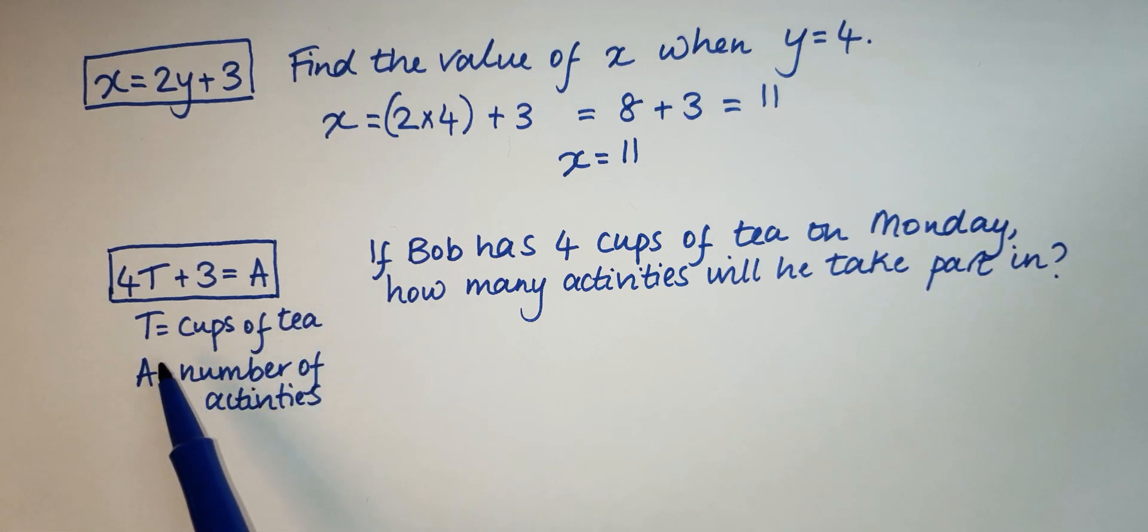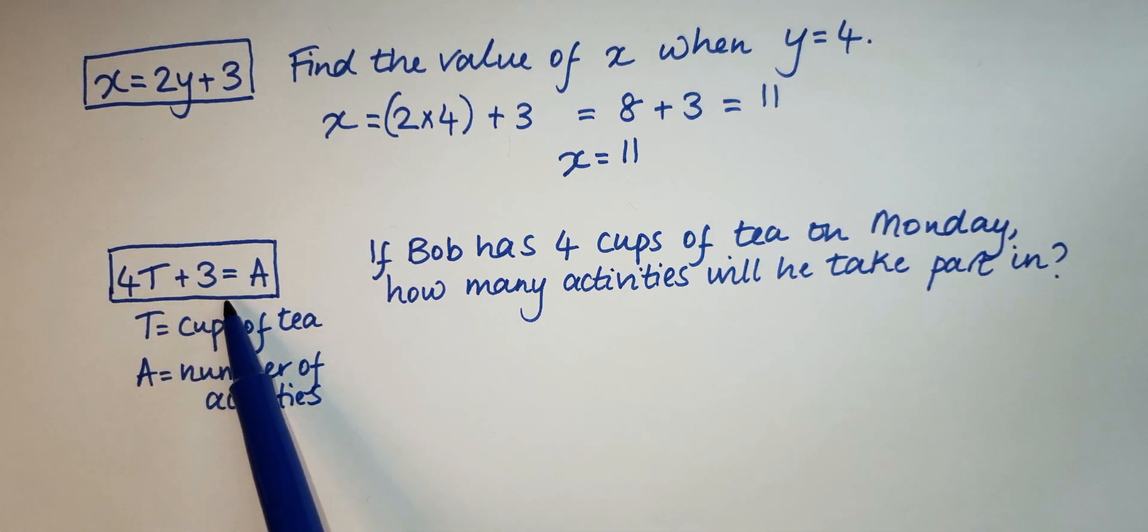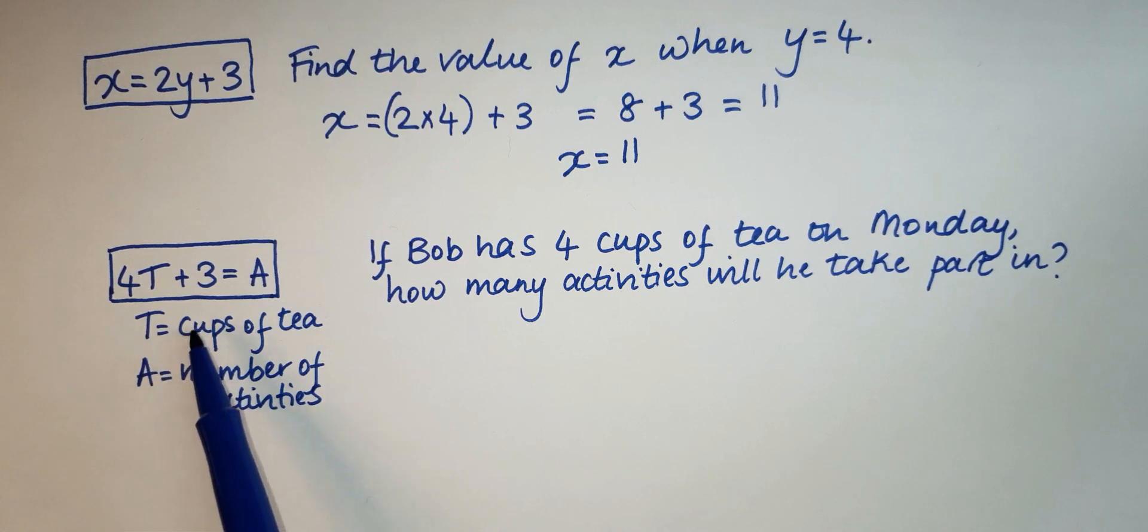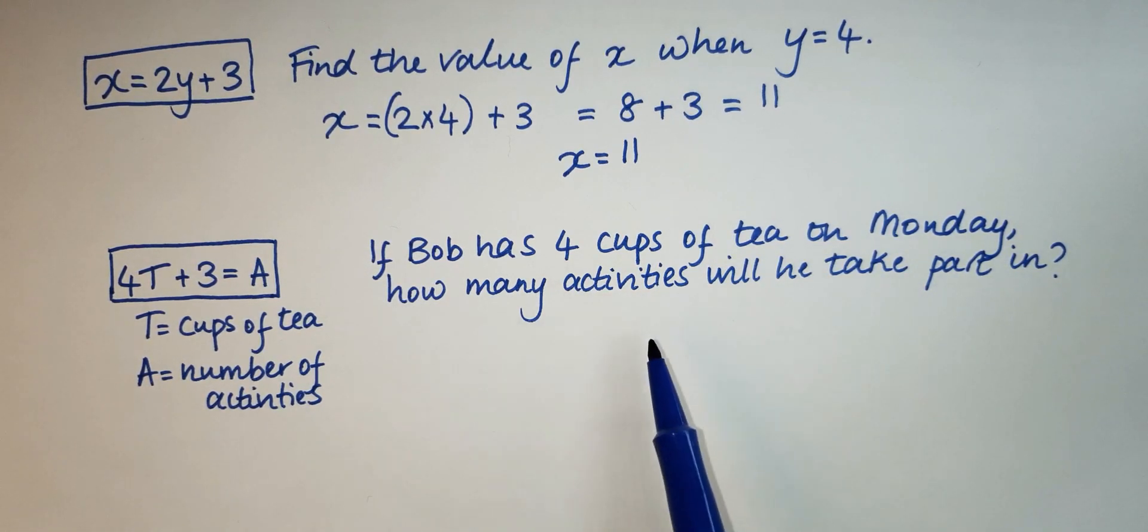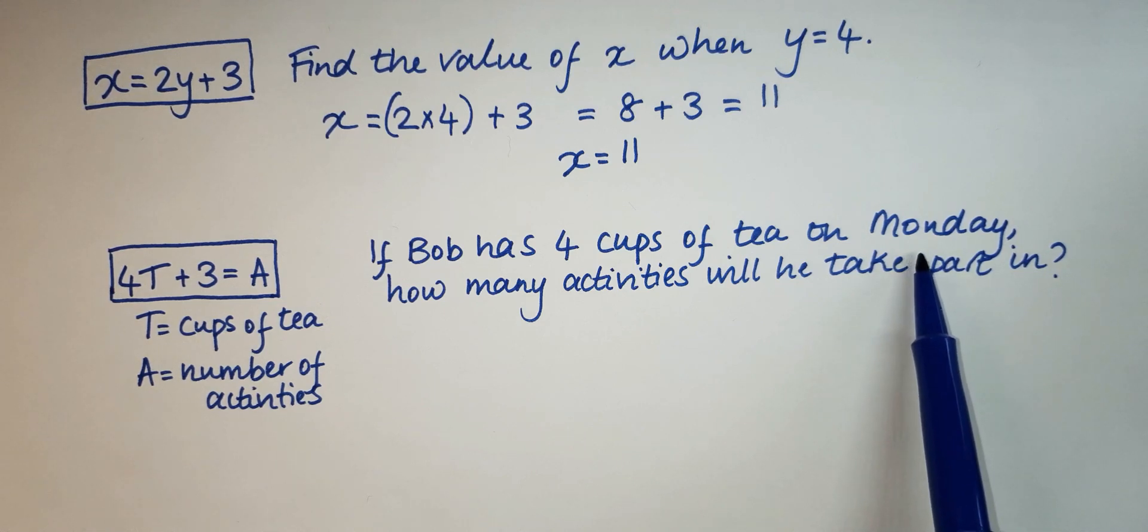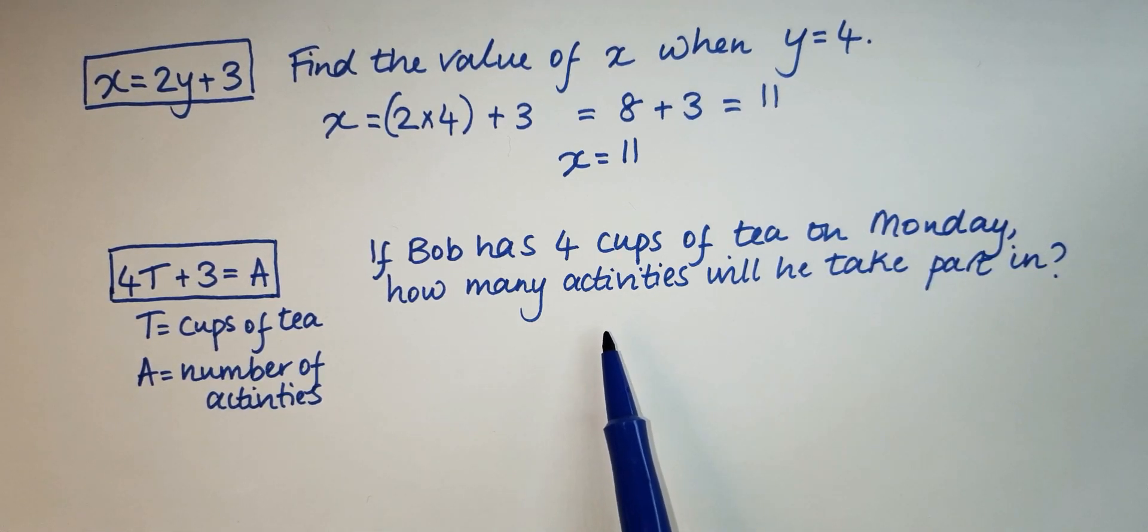So let's just do that. Here we've got another formula that they've given to us and they've told us what the letters represent. So here we've got 4T plus 3 is equal to A. T is the cups of tea and A is the number of activities. Now the question says if Bob has four cups of tea on Monday, how many activities will he take part in?